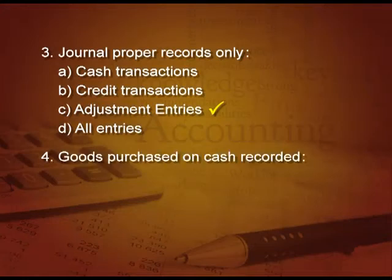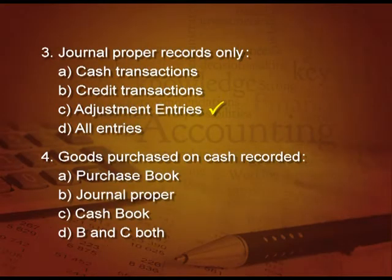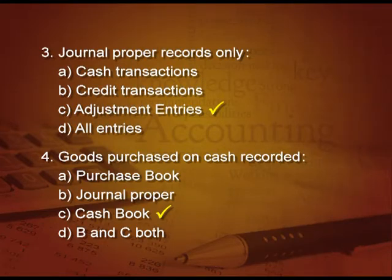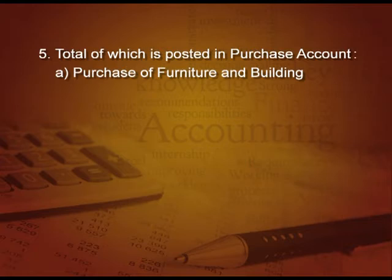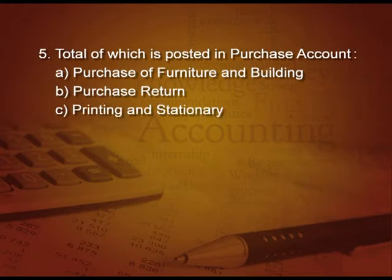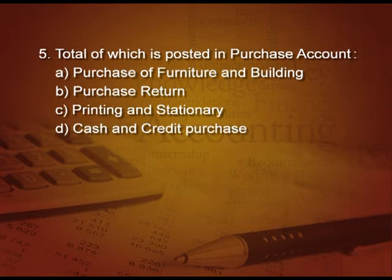Next question: goods purchased on cash is recorded in — purchase book? No. Journal proper? No. Cash book? Yes, because we have purchased in cash. The fourth option was both B and C, which is wrong. Next question: total of which is posted in the purchase account? First option: purchase of furniture and building. Second: purchase return. Third: printing and stationery. Fourth: cash and credit purchase. The last option is correct — all cash and credit purchases go to the purchase account periodically, say after 15 days or a month.